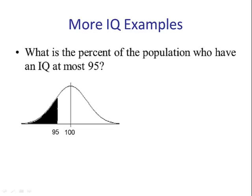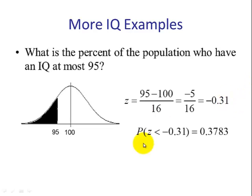Next step, we change 95 to a z-score. Be sure to include the negative sign because 95 is less than the mean, so our z-score will be negative, negative 0.31. Looking up in table 5, we see that the probability of z being less than negative 0.31 is 0.3783.